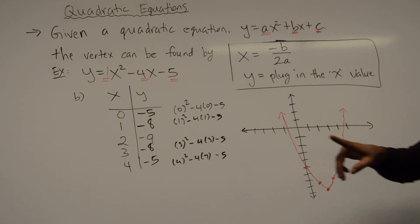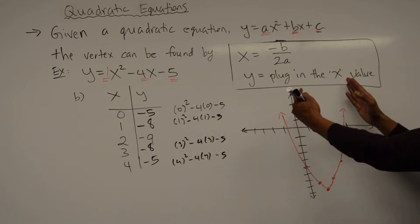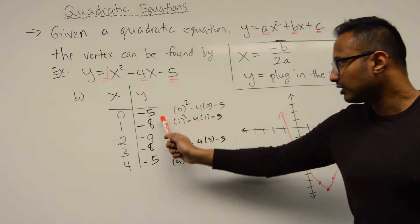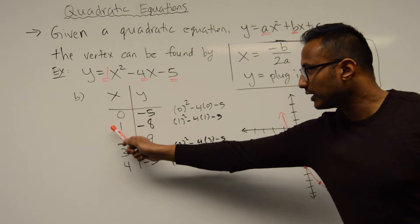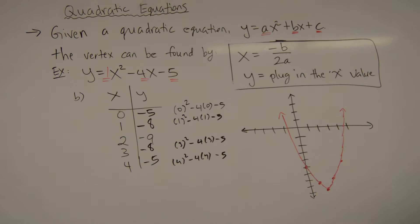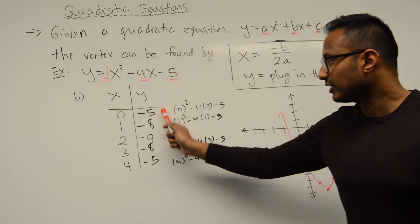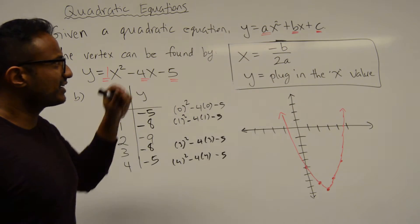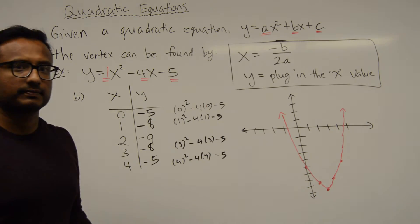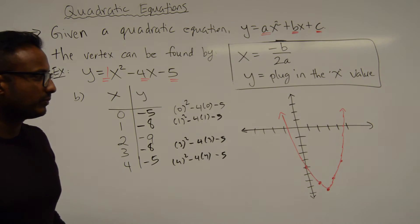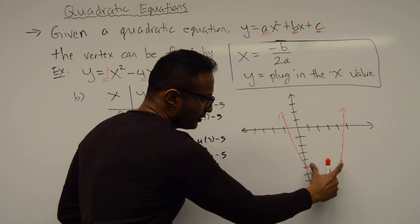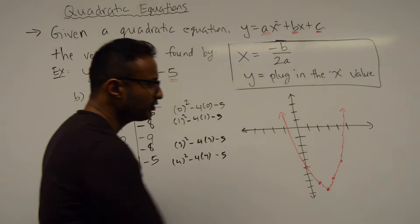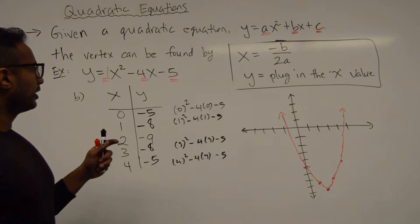The vertex is the center point where the two sides of the parabola come together. Notice that if you go one unit away from the vertex in either direction, you get the same y-value of -8. If you go two units left or right, you also get the same y-value of -5. Quadratic equations are symmetric in relation to the vertex — going equal distances left and right always gives the same y-value.